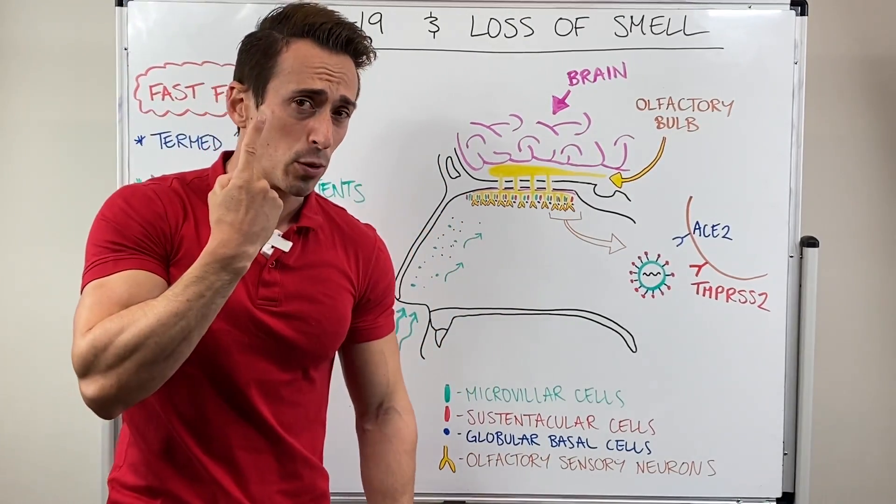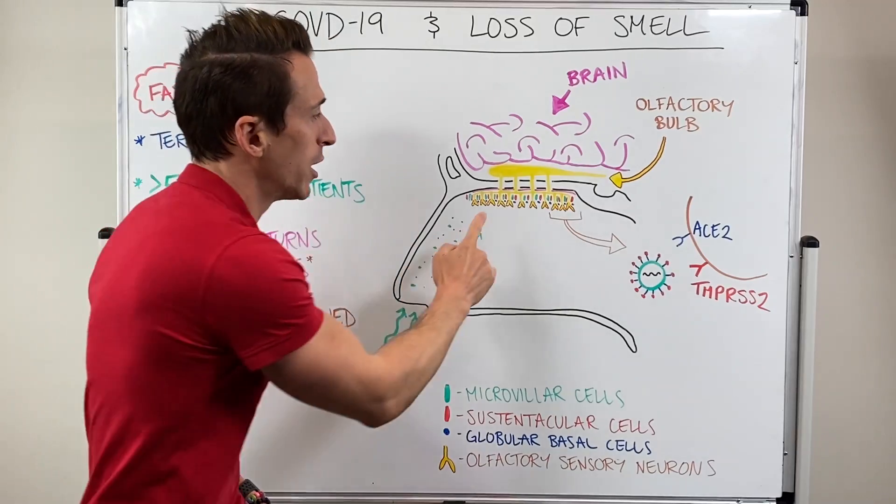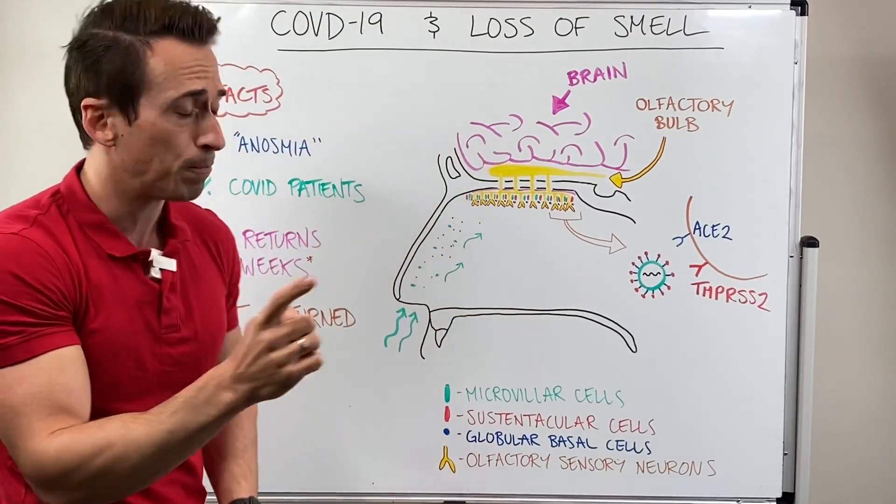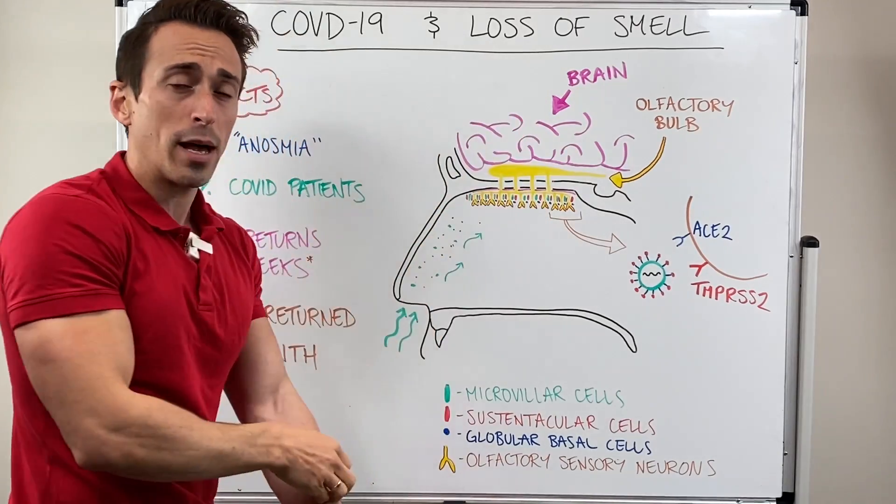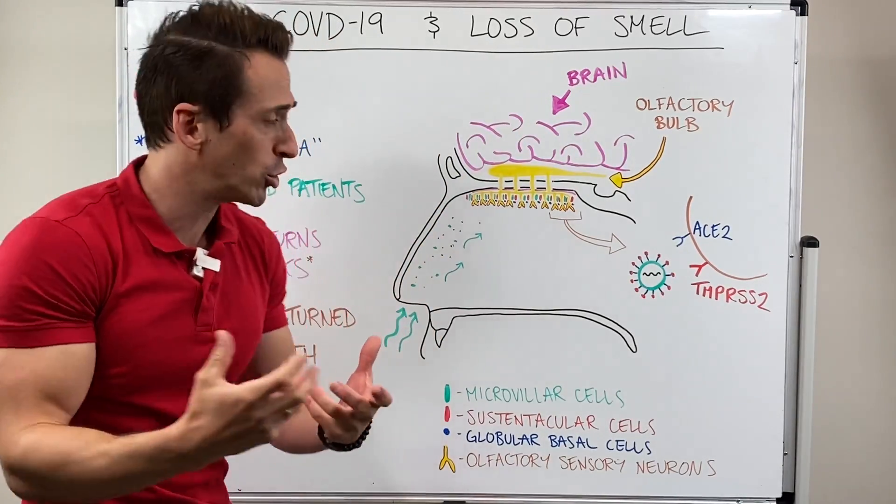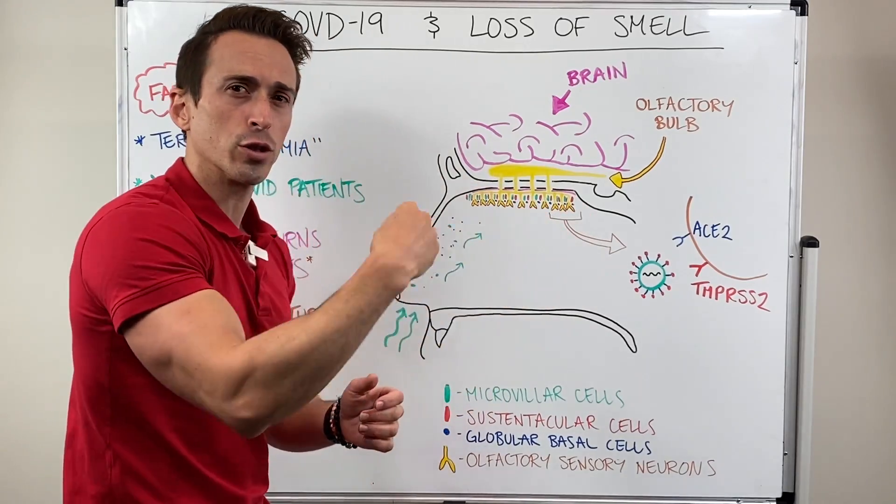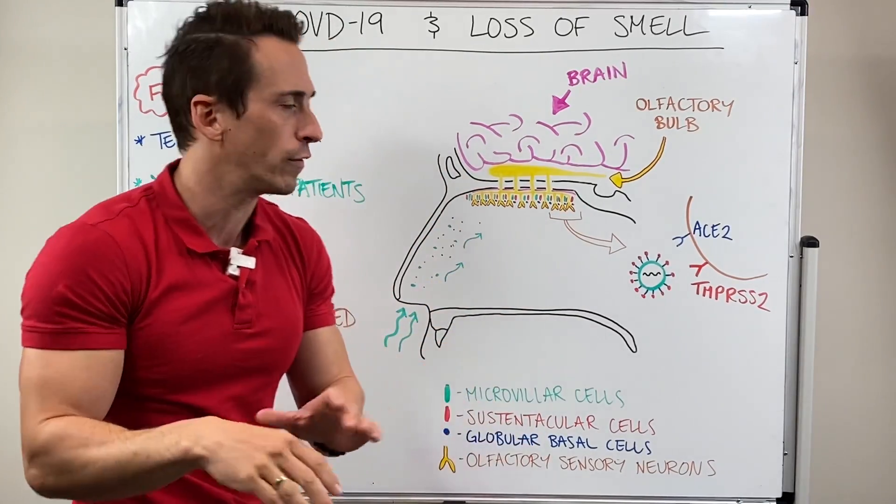If you were to get your finger and stick it up your nose, you wouldn't be able to reach this area up the top here, which we term the olfactory epithelium. The neurons that project through this bony plate can actually be damaged due to a knock, and what happens is the bony plate shears these neurons off. This isn't what's happening in COVID-19.